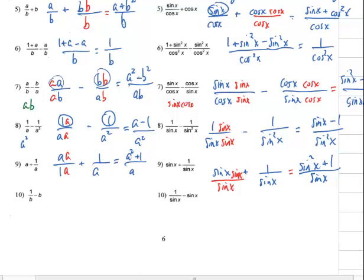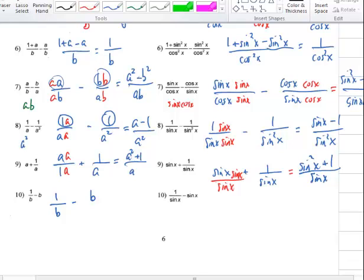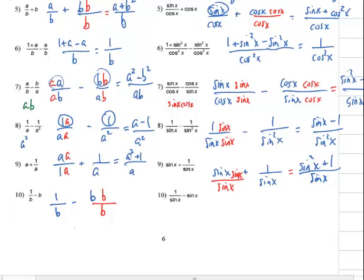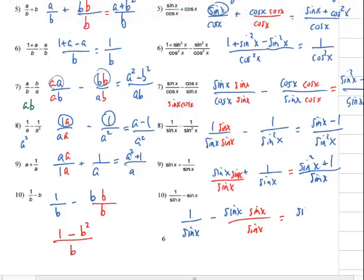Last one. We have 1 over b minus b. I want to put a b in the bottom of the second term to have the same denominator, so that would be b over b. We have the same denominator, so the result is 1 minus b squared all over b. For the trig version, we do the same thing with sine of x: 1 over sine of x minus sine of x. I introduce sine to top and bottom, and the result is 1 minus sine squared of x all over sine of x.